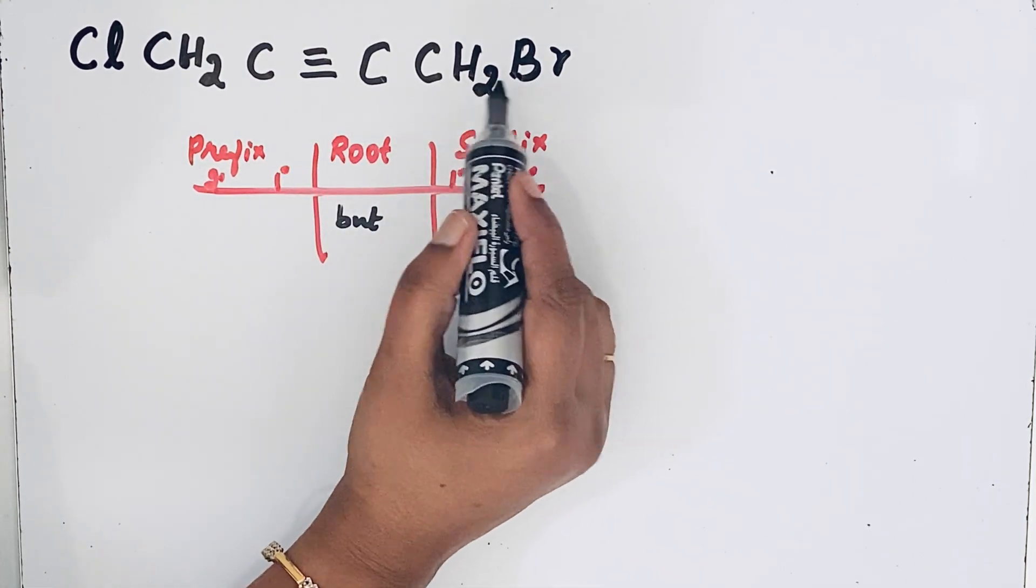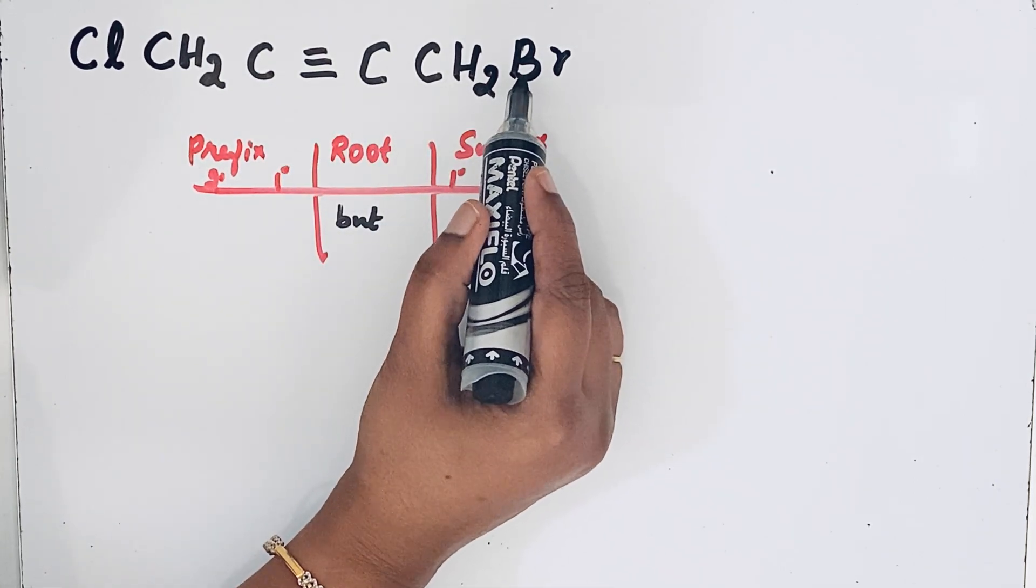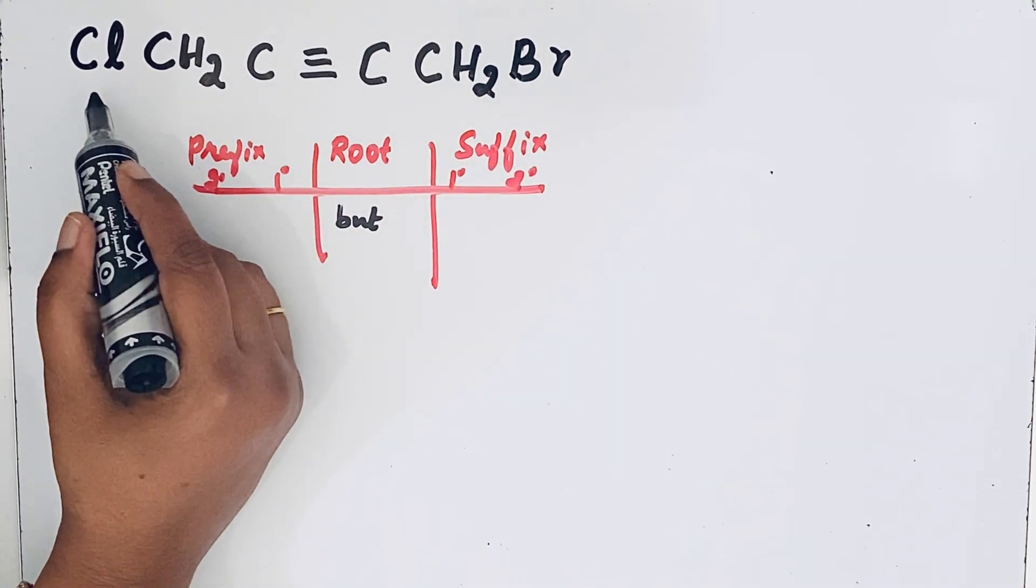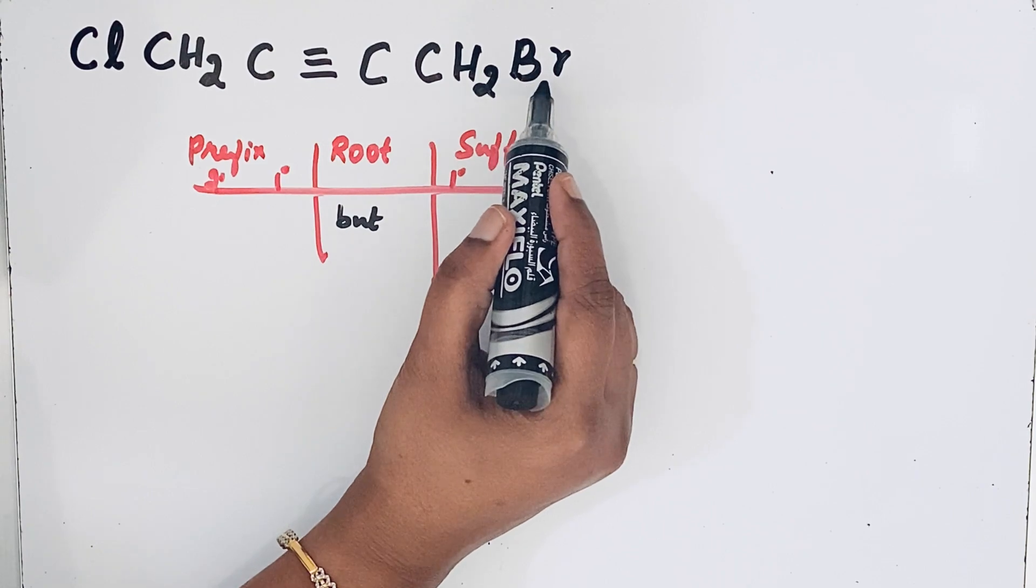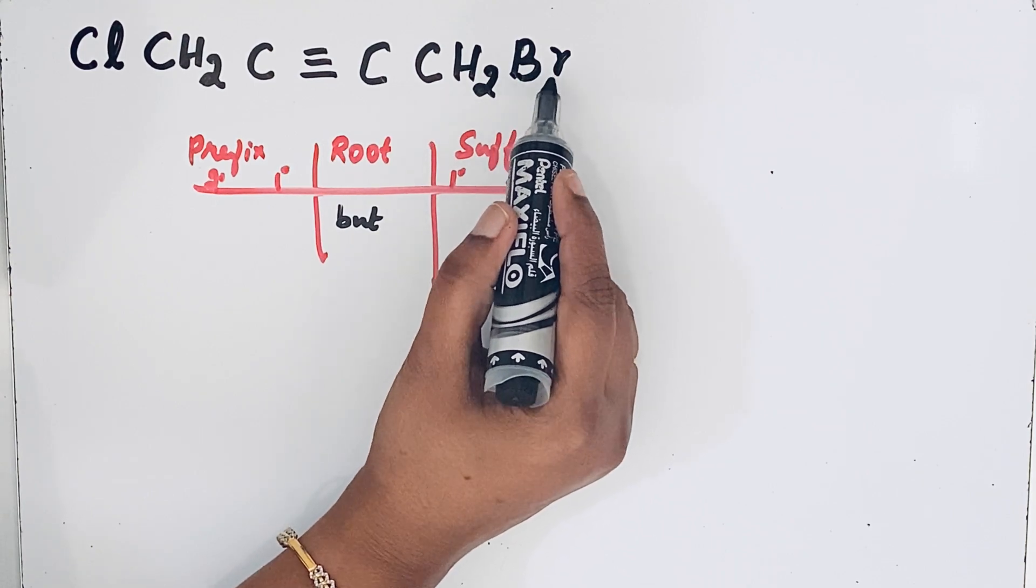So let us see the substituents. Here two substituents are present, Bromo and Chloro. So Bromine in the alphabetical order comes first, so this one should get that priority.